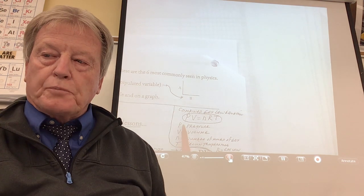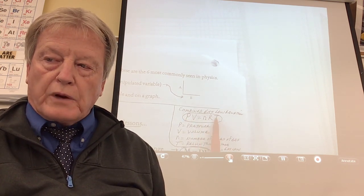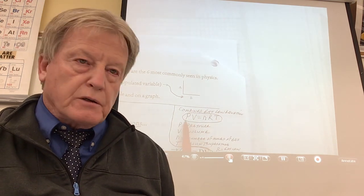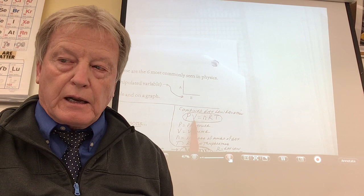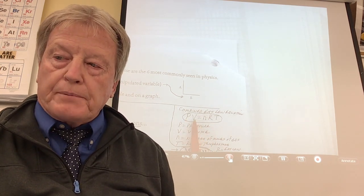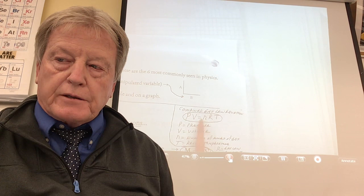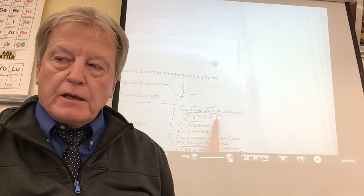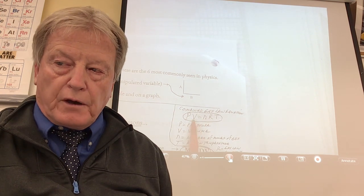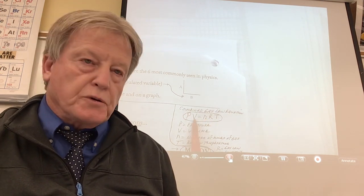How is pressure related to Kelvin temperature? Pressure is directly proportional to Kelvin temperature. If Kelvin temperature got three times greater, the pressure of that gas would get three times greater, assuming volume can't change. How about volume and number of moles? They're directly proportional — assuming pressure and temperature don't change. If a balloon had a certain amount of moles of gas and a certain volume, tripling the number of moles without changing pressure or temperature would actually triple the volume of that gas.